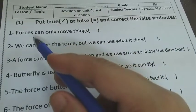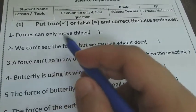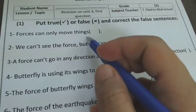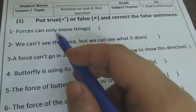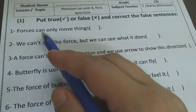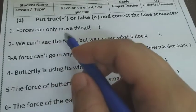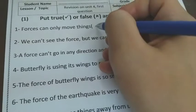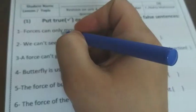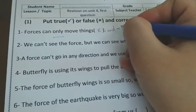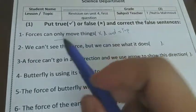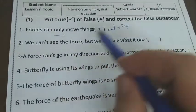Number one, forces can only move things. You remember this? Forces can only move things or also can stop things. So forces can move and stop things. So this will be false and we underline only move and write and stop. So forces can move and stop things.